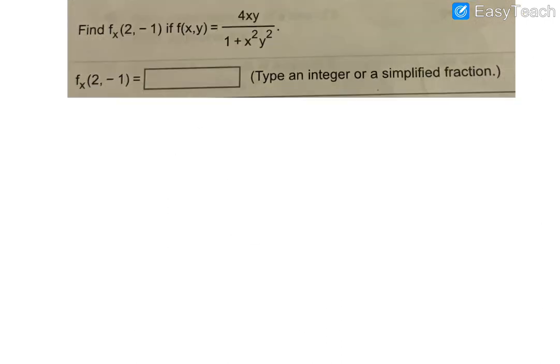All right, so notice on this last one, we again are deriving with respect to x. This time we're going to have to use a quotient rule. And then we're also going to plug in at the end the values x equal 2 and y is equal to negative 1. So I'm going to start first with just the derivative of function f with respect to x. So with the quotient rule, we take the derivative of the top first. So remember you're treating the 4 and the y like a constant. The derivative of the x to the first is just 1.